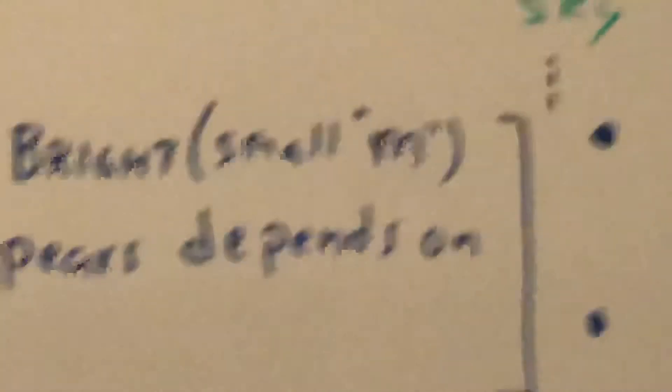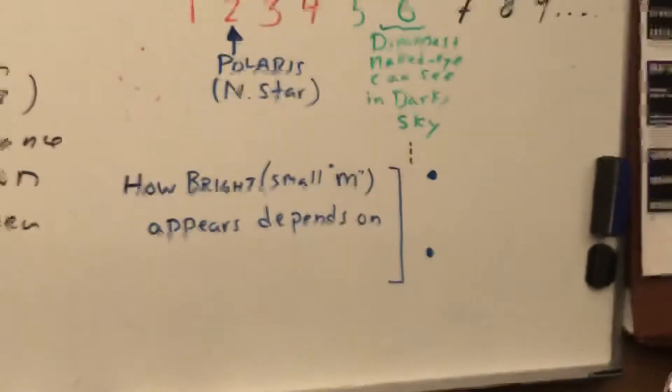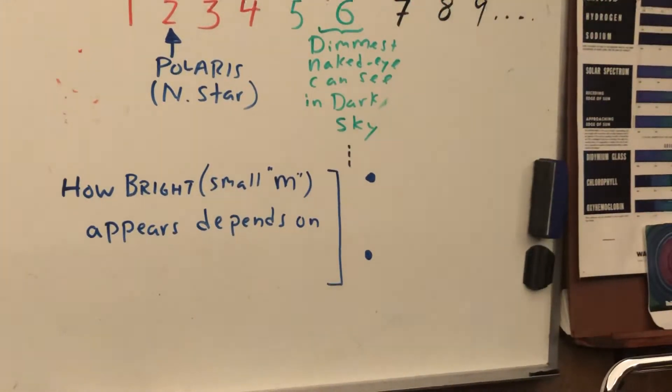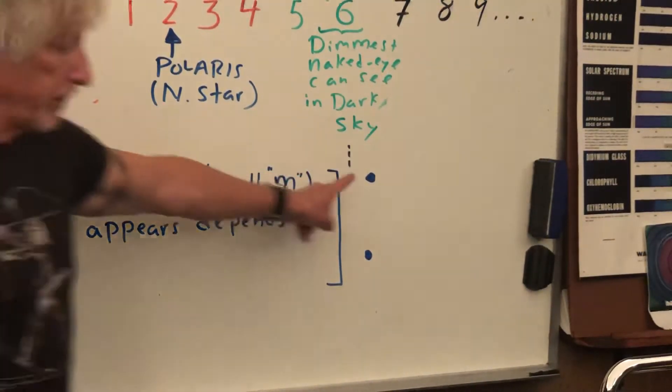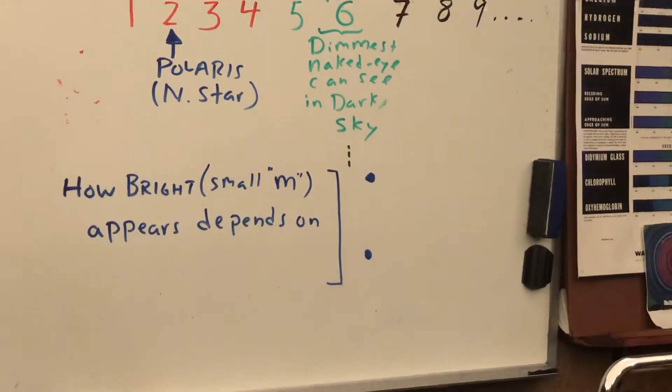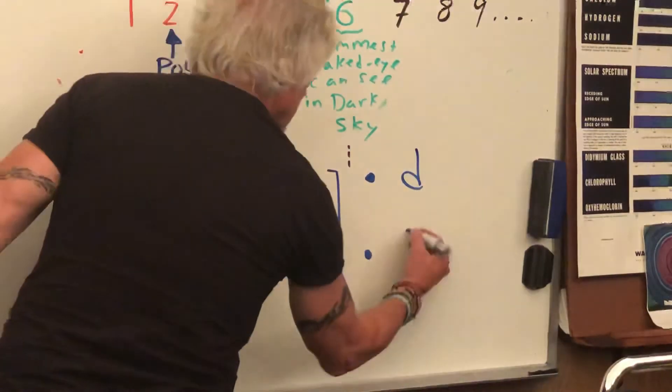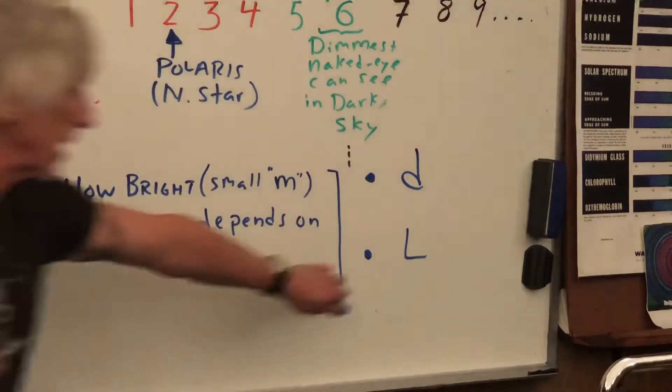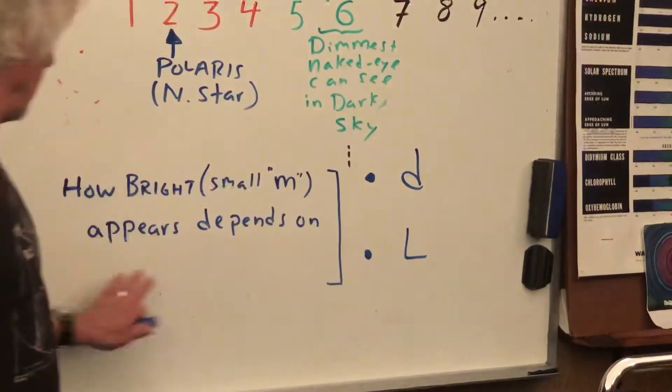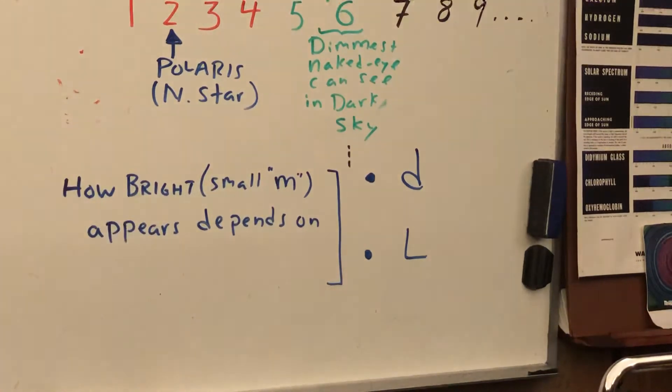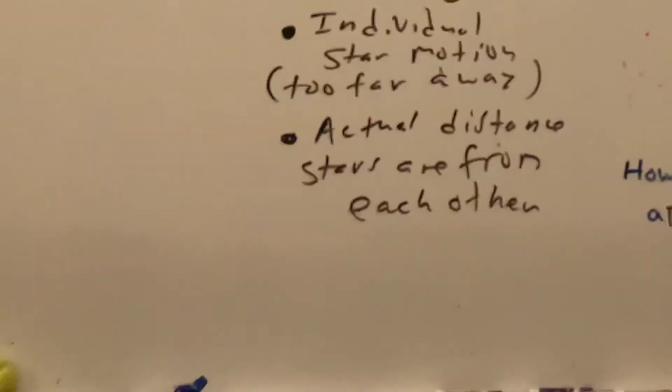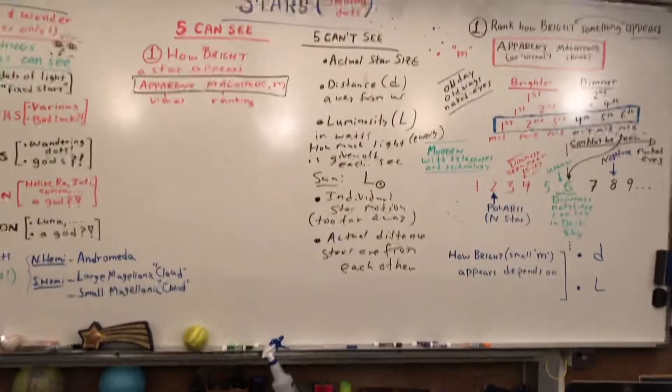Now notice the dust. That can also dim a star, and I just want to come back here really quickly. How bright a star appears depends on the distance away from us and the luminosity. So I can summarize this like that: how much light it gives off and how far away, also dust. Let me take a quick look at the book.